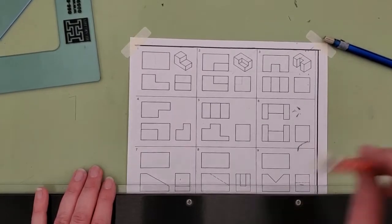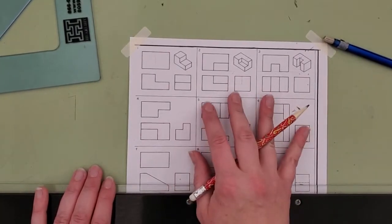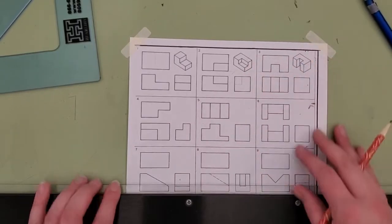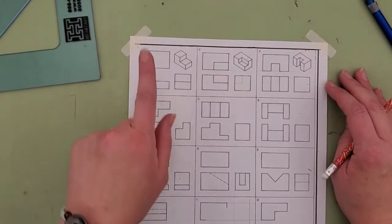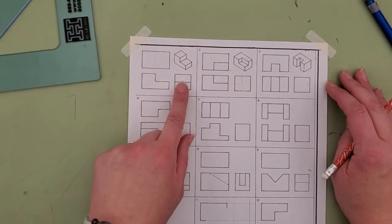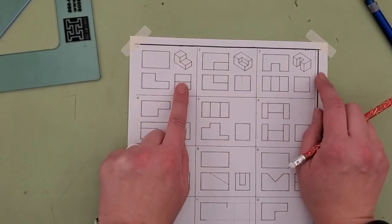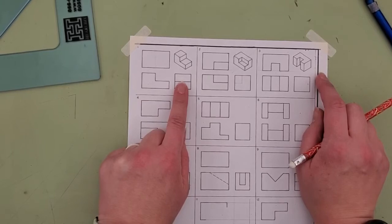On this assignment, we are going to be doing something called completing the view. What you're given is a bunch of different views for objects - the top, the front, and the right side view. Only the top three have a given isometric to help you figure out what the item is supposed to be.